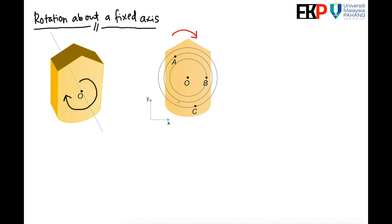Point O is the center of rotation. Suppose we have a few points on the rigid body: point A, point B, and point C. Throughout the rotation, each point follows a circular path. This is how point A moves during the rotation, and similarly point B and point C each move in their own circular path.